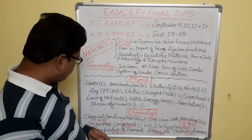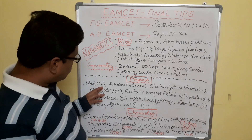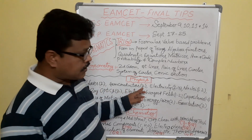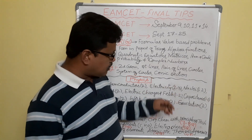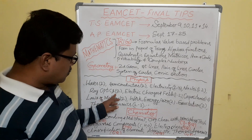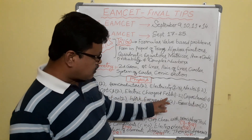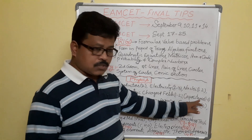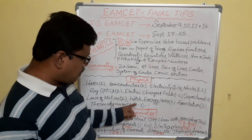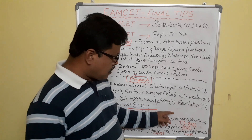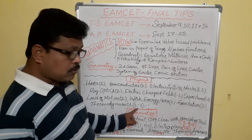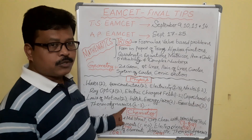Coming to the physics part: waves — 2 bits; semiconductors — 2 bits; electricity — 2 to 3 bits; nuclear — 1 or 2 bits; ray optics — 2; electric charges and fields — 1 or 2; capacitance — 1 or 2; laws of motion — 2 bits; work energy power — 2; gravitation — 2; thermodynamics — 2 to 3 bits, this is very important.